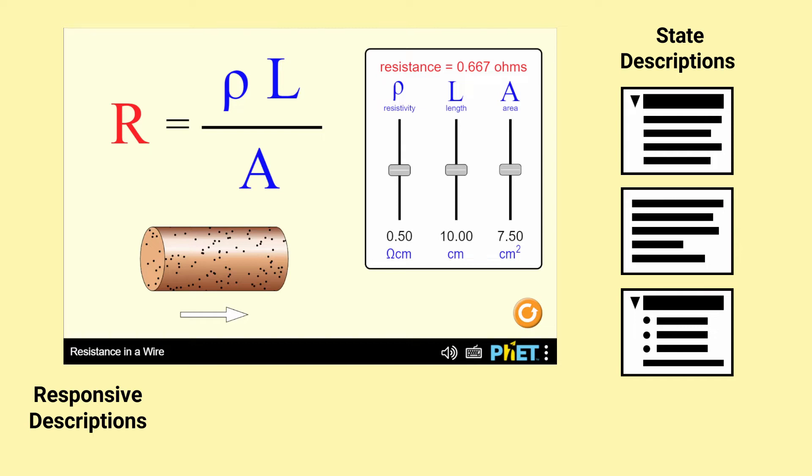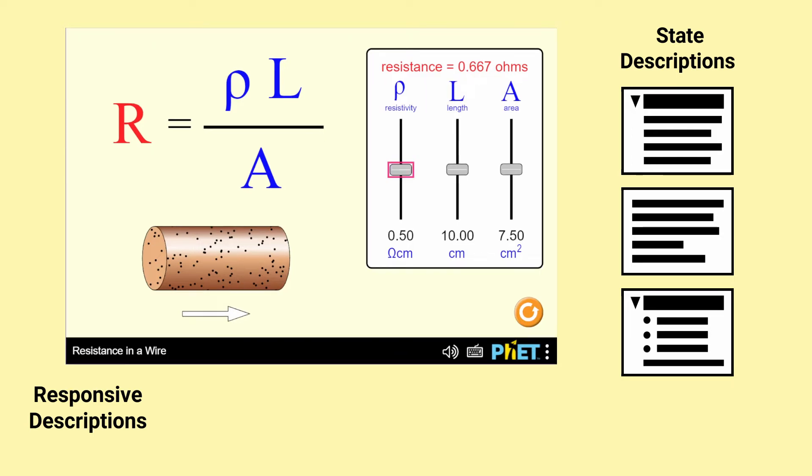State Descriptions are available at any time for the learner to navigate and read through, just like they would read through a typical webpage. State Descriptions include a brief summary of what's on screen and information about the current state of objects and controls, all nicely organized with headings, brief paragraphs, and bullet lists. This information updates as the learner interacts and the simulation changes, so the learner can return to the State Descriptions at any time, as they need to.